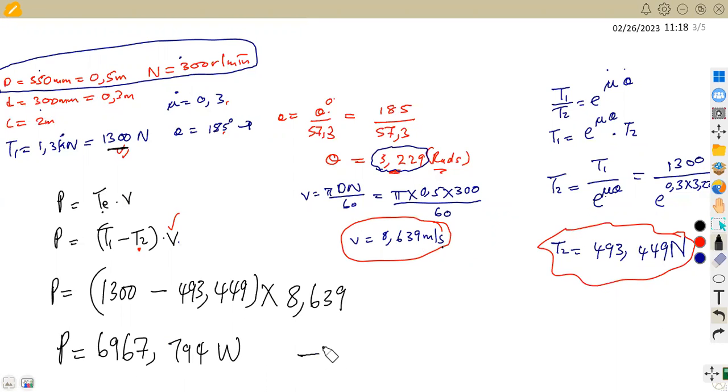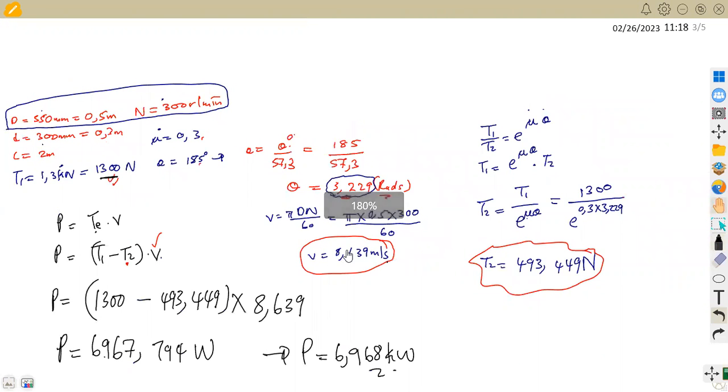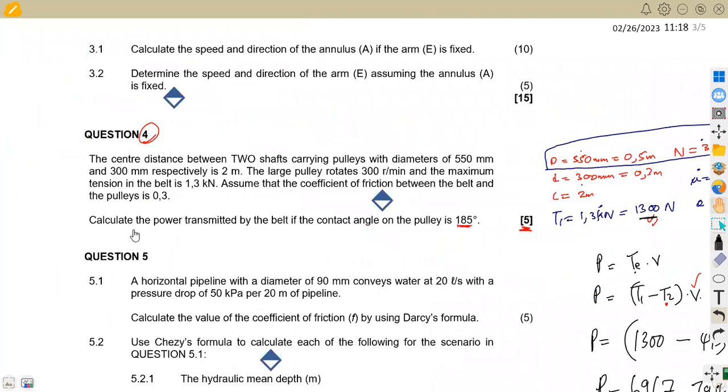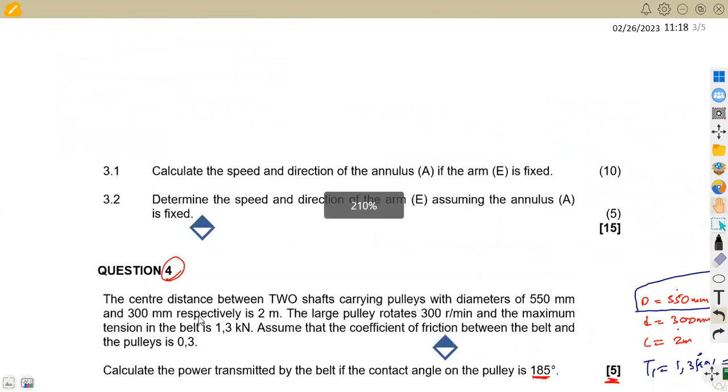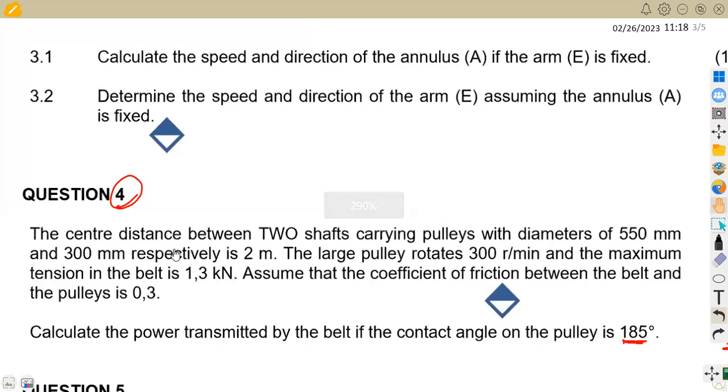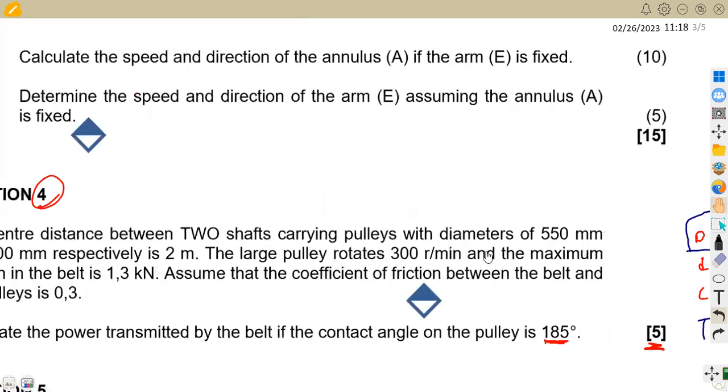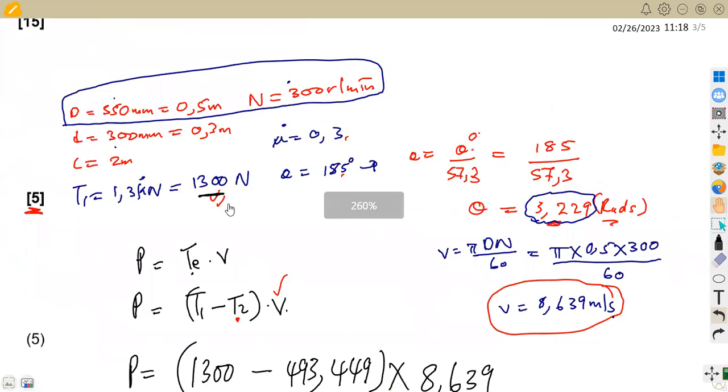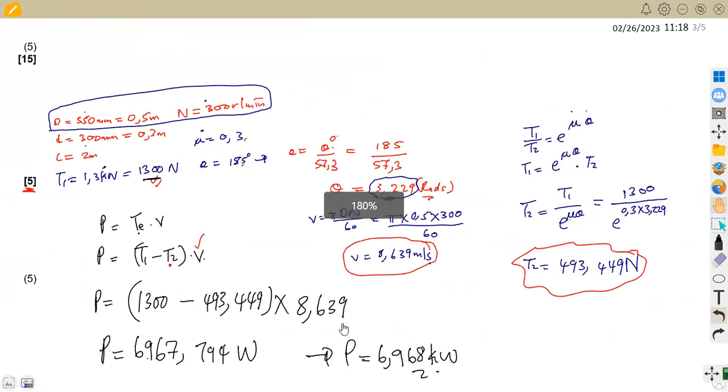So that's your power in watts. Or you can convert this power to kilowatts, which is divided by 1000. It is going to be 6.968 kilowatts. So you can give our power in kilowatts. That was not a problem because the question is just asking you to calculate, in this case, the power transmitted. So you're not given in kilowatts, in watts, or so you can just leave your answer in any unit that is comfortable, that you're comfortable with.